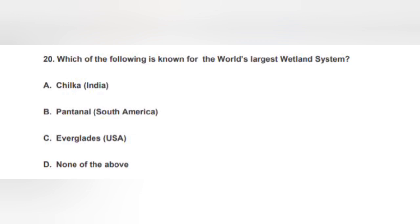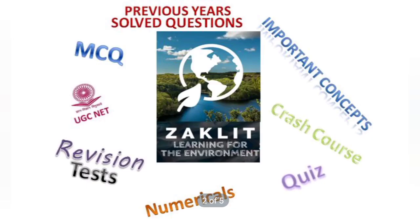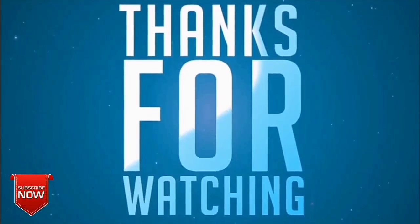The next question: Which of the following is known as the world's largest wetland system? Among the four options, the correct answer is B — the Pantanal in South America is the world's largest wetland system. That's all for this lesson. Wait for upcoming updates related to environmental science and entrance examinations. All the best to everyone.